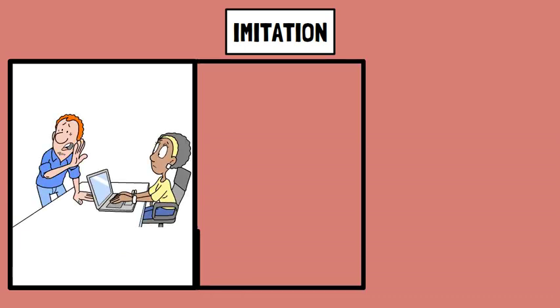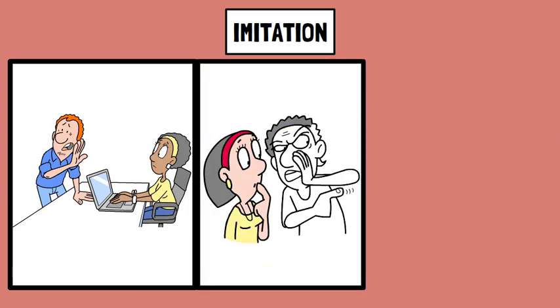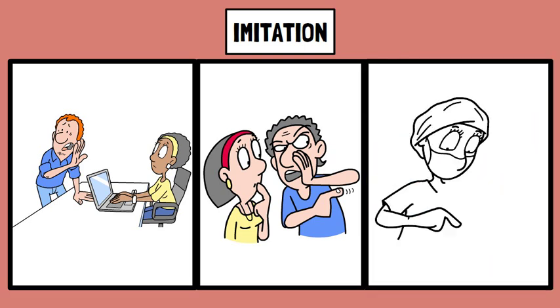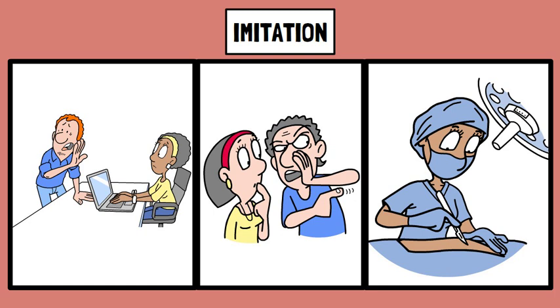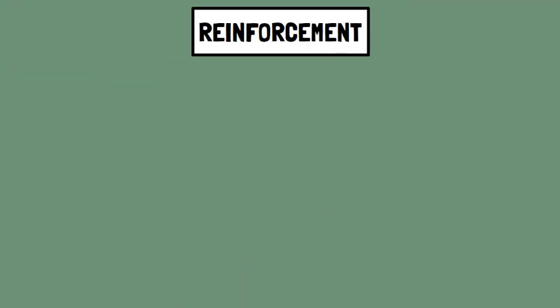Imitation is a central aspect of observational learning. Individuals replicate behaviors they have observed in others, and this process plays a crucial role in the transmission of cultural practices, social norms, and even complex skills.